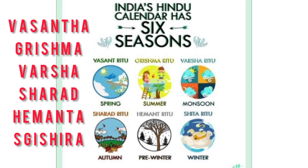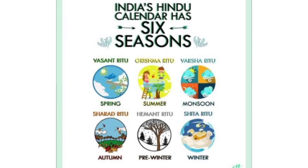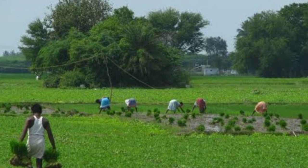Our ancient Sanskrit literature divided the year into six seasons, adding an intermediate season between each of the main seasons. These are called Rithus. The six Rithus are: Vasantharithu (Spring), Grishmarithu (Summer), Varsharithu (Monsoon), Sharadrithu (Autumn), Hemantarithu (Pre-winter), and Shishirarithu (Winter).